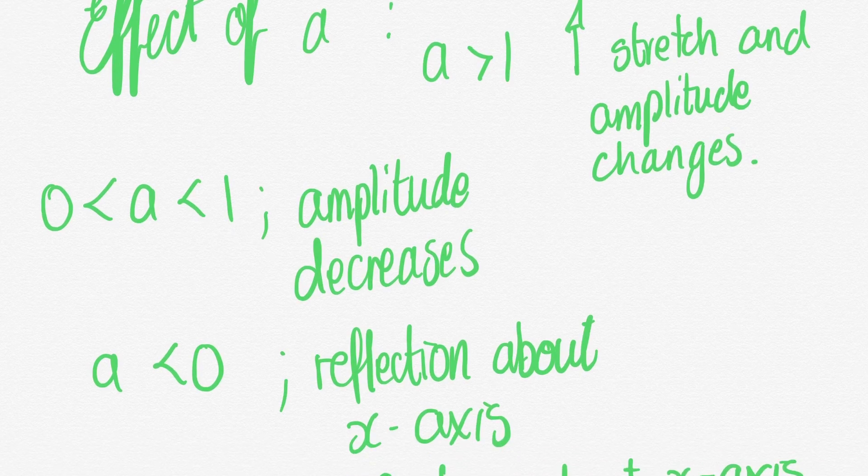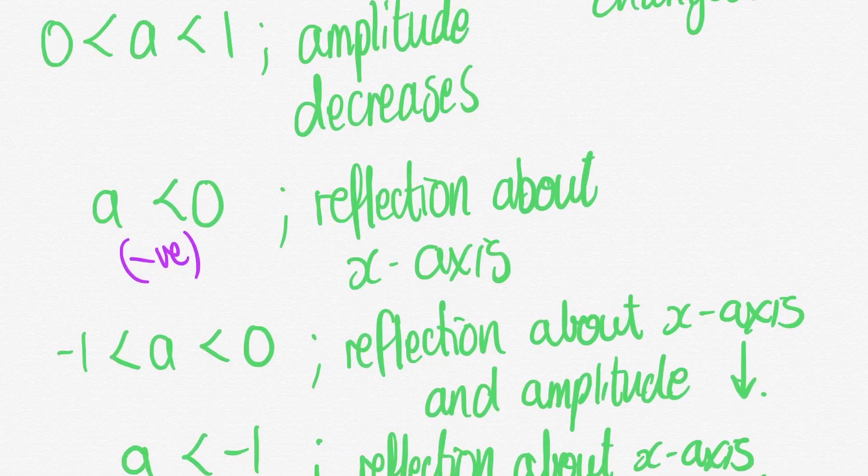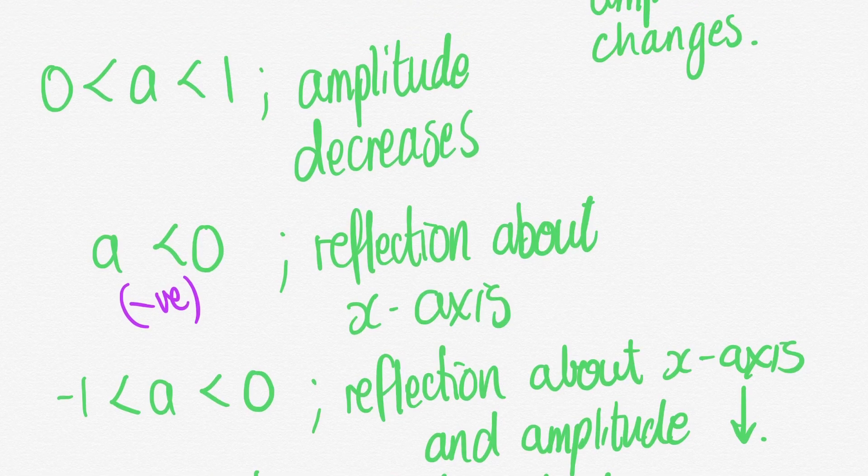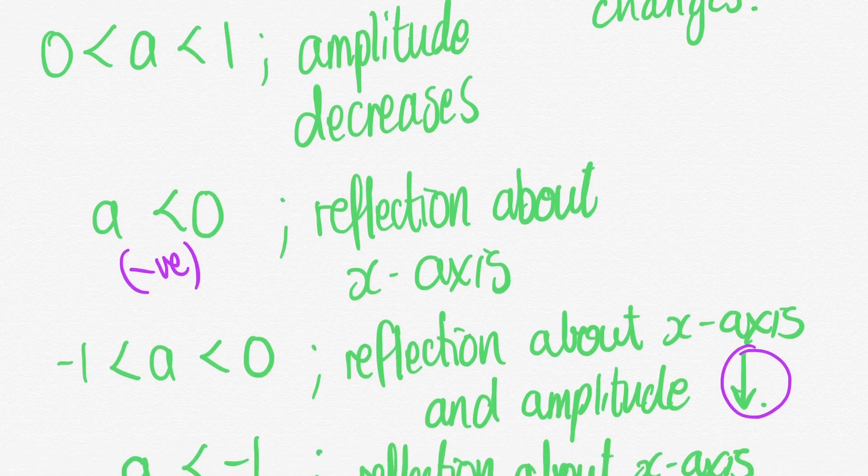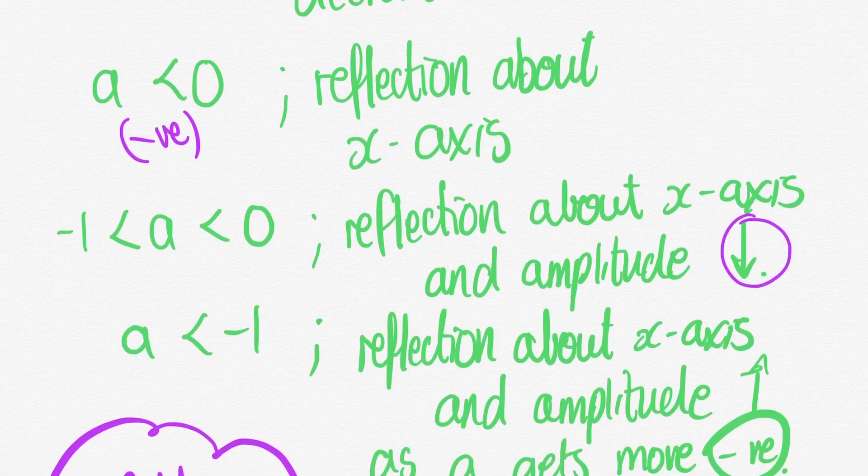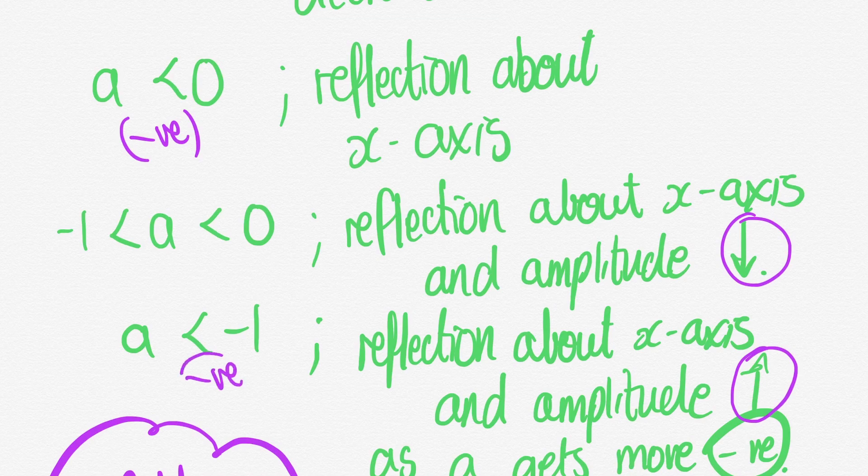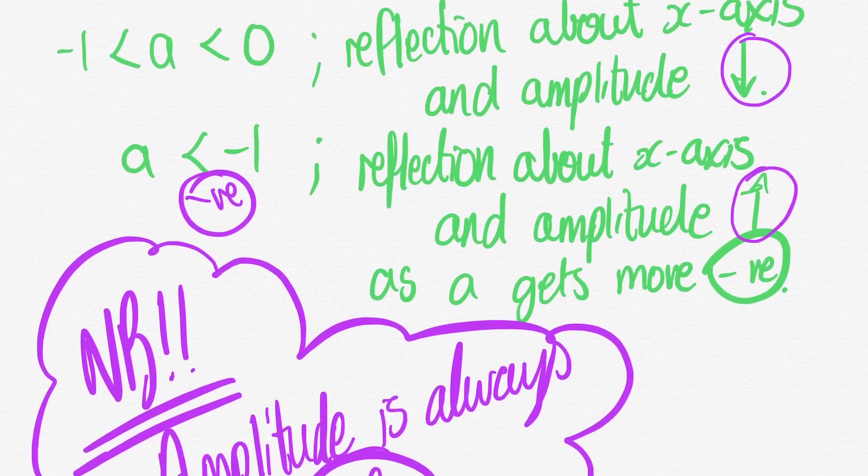When a is greater than one we say there's a stretch in amplitude. When a is between zero and one we say there's an amplitude decrease. When a is less than zero there's a reflection about the x-axis. When a is negative but between zero and minus one, there's a reflection about the x-axis and an amplitude decrease.